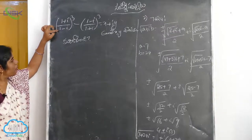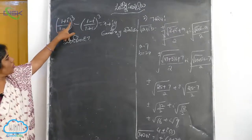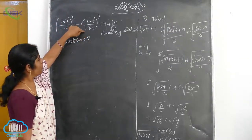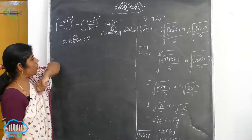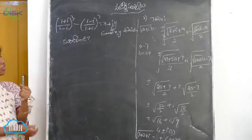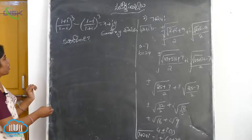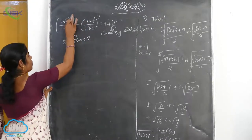So, (1+i)/(1-i) whole cube minus (1-i)/(1+i) whole cube is equal to x plus iy. This is also one of the very important sums from an examination point of view.